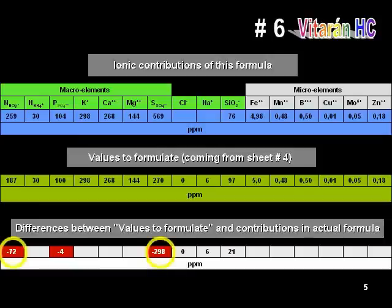Therefore, it will be necessary to adjust those differences as much as is possible, especially when big variations are involved. In order to achieve these adjustments, you should alternate between page number six, the previous one number 5A, and the basic design chart in sheet number two to reach an acceptable result.